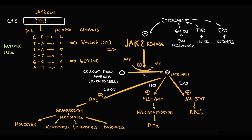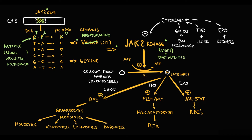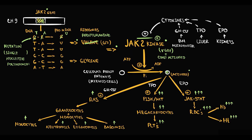But if a mutation causes substitution of valine for phenylalanine at position 617 of JAK2 kinase, JAK2 kinase becomes constantly activated. So this regulation by cytokines is gone. This mutation causes disproportional activation of intracellular pathways, resulting in a mild increase in granulocytes and monocytes, a moderate increase in platelets, and a severe increase in red blood cells. With increasing red blood cells, hemoglobin concentration and hematocrit will also proportionately increase, while erythropoietin concentration will proportionately decrease.